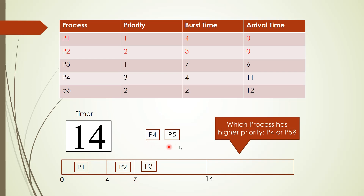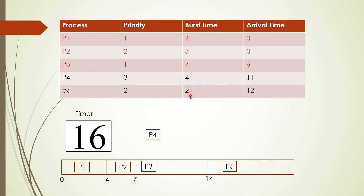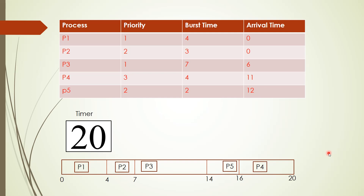Now left in the system are P4 and P5, and we have to identify which one has higher priority. Between P4 (priority 3) and P5 (priority 2), P5 has the smaller value, meaning it has higher priority. So P5 is given the CPU. P5 needs two clock cycles, running from 14 to 16. Then P4 is sent to the CPU for four clock cycles, executing from 16 to 20.